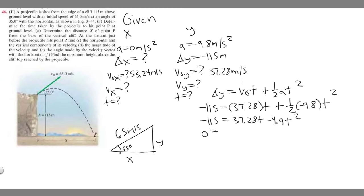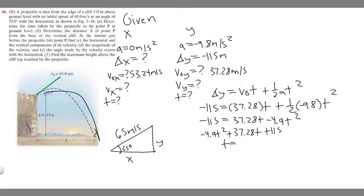Adding 115 to both sides puts it in quadratic form: minus 4.9T-squared plus 37.28T plus 115 equals zero. Plugging this into a calculator and using the zero function to find where it crosses the x-axis gives the time. One root will be negative, so we take the positive value: T equals 9.96 seconds. That is the answer to part A.